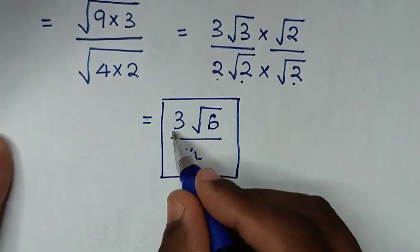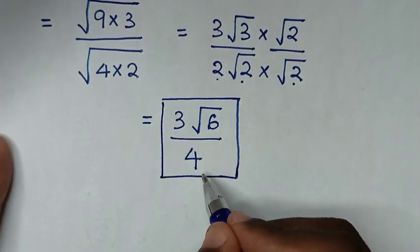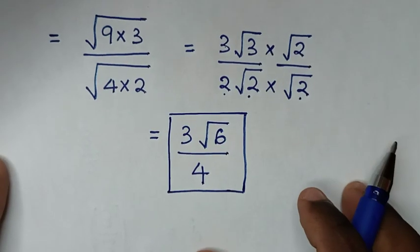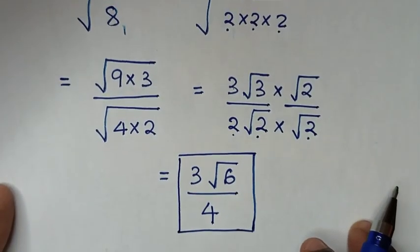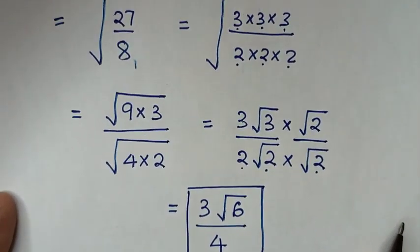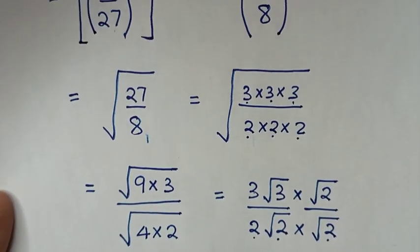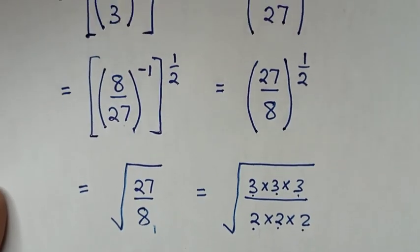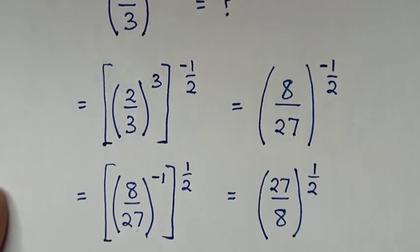So our final answer is 3 square root of 6 over 4. Thank you, don't forget to follow these steps. Subscribe to my channel and see you in the next video. Bye bye.